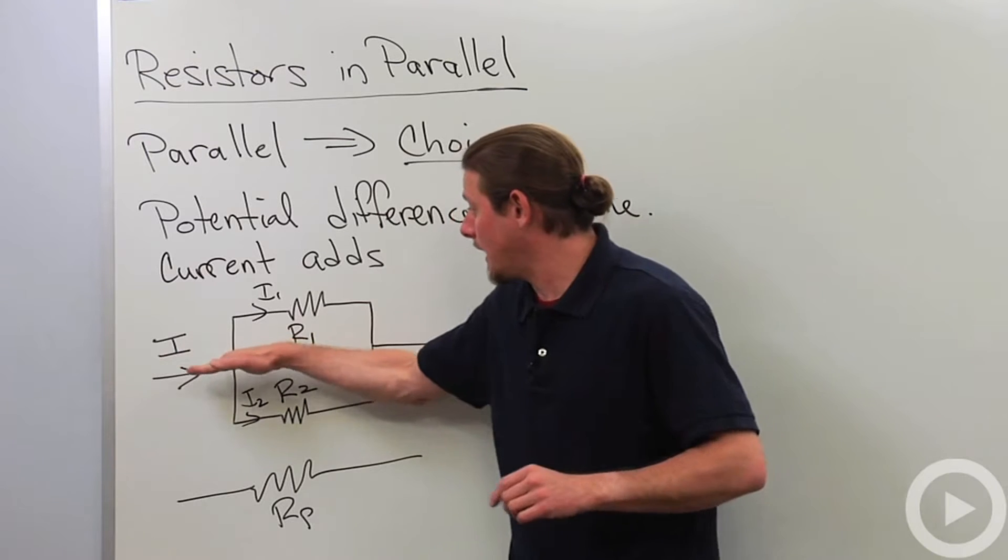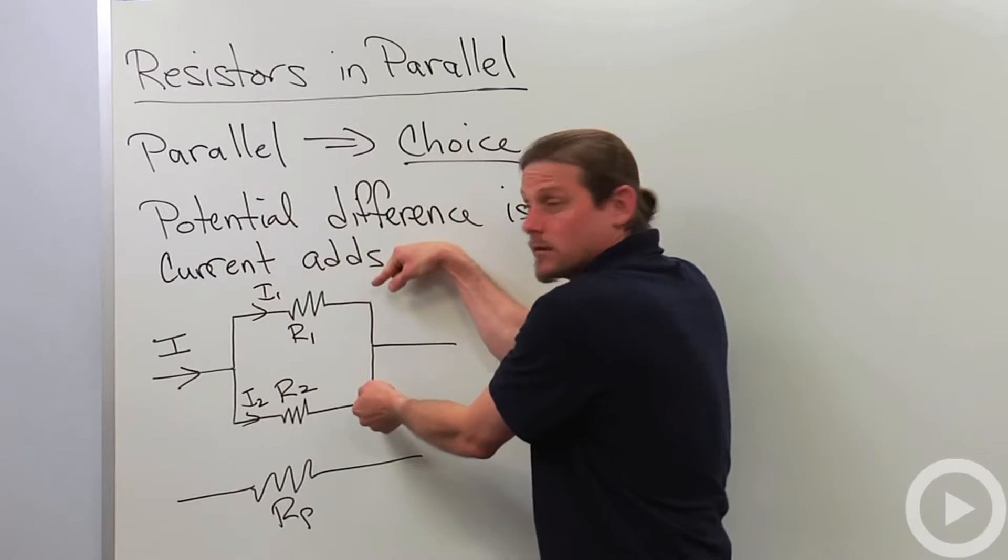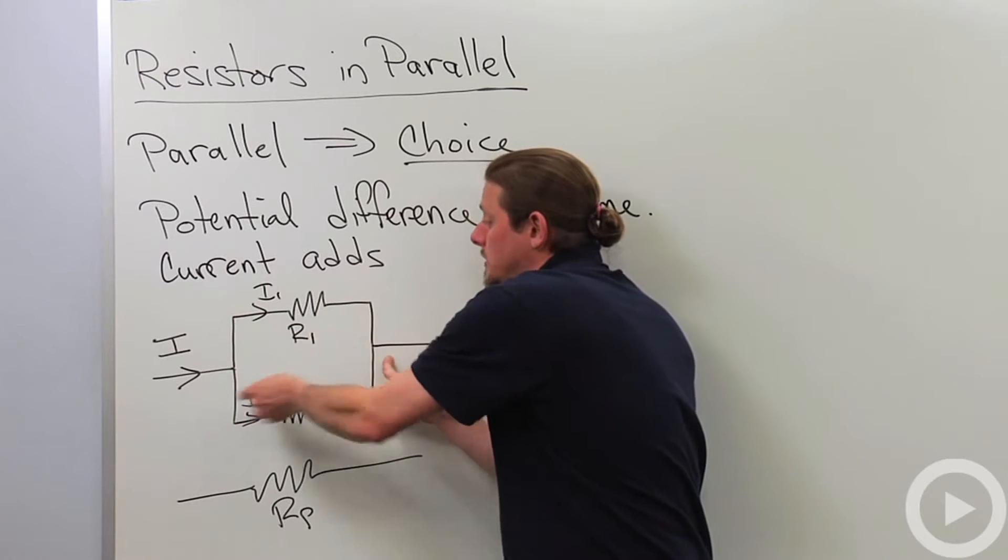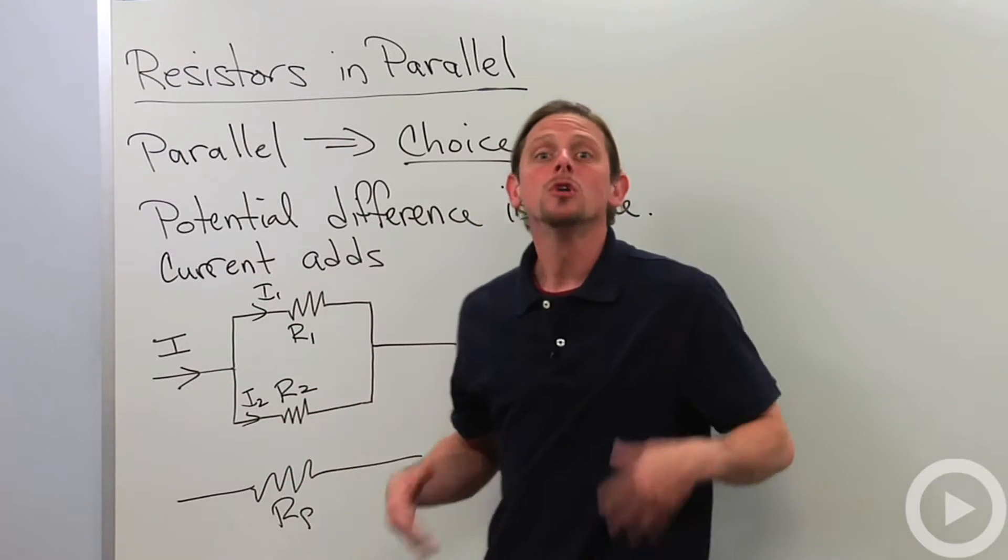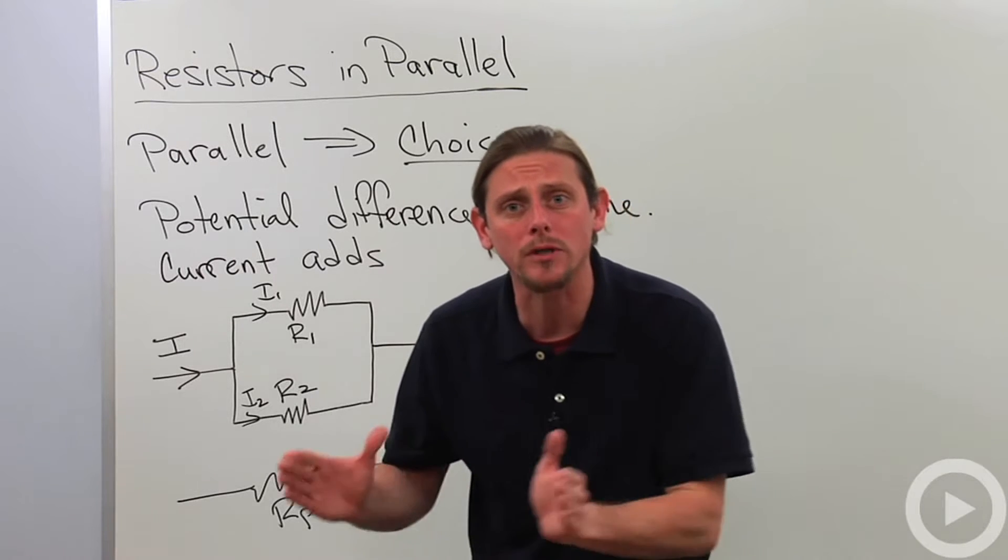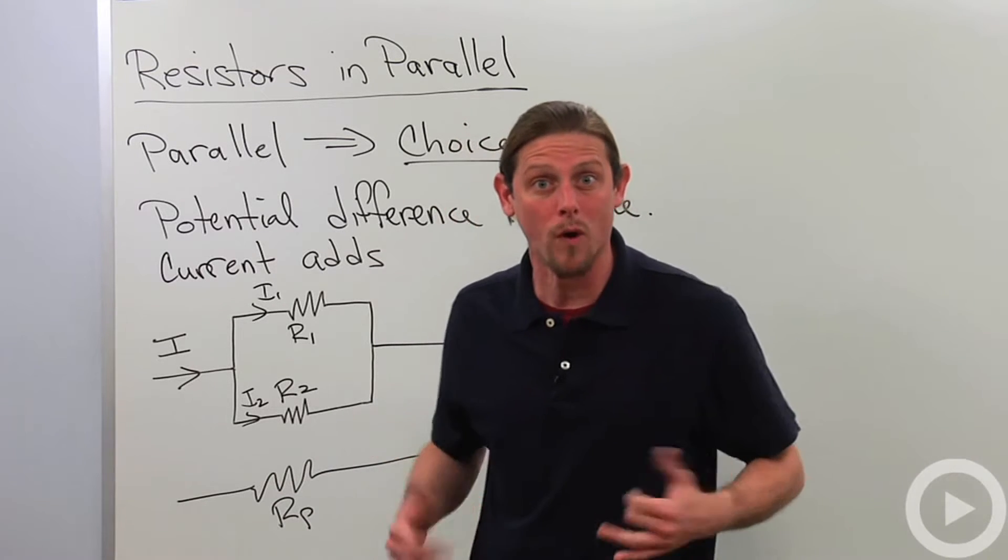The current comes in and then has a choice. It's going between the same two points, but there's two different roads that it can take. So basically parallel networks consist of two separate circuits that are independent of one another.